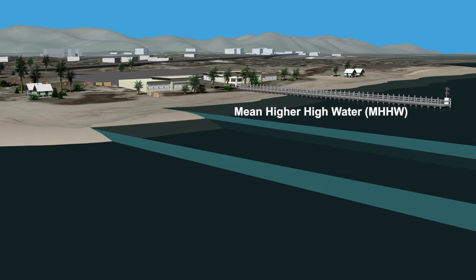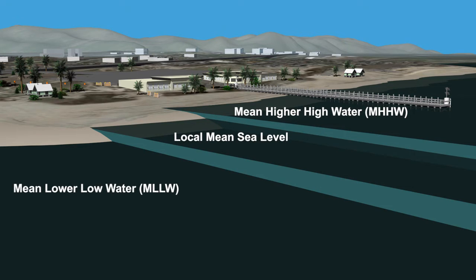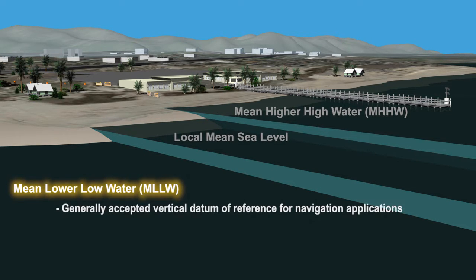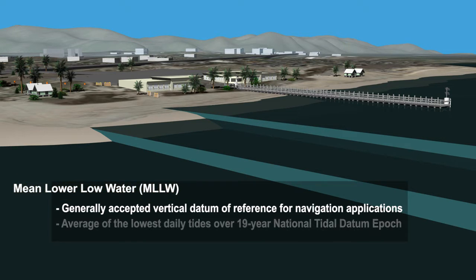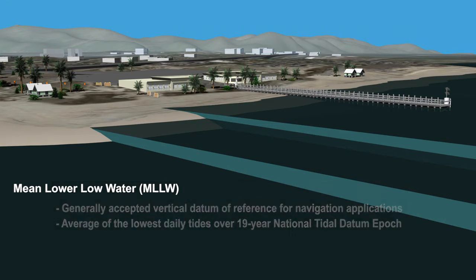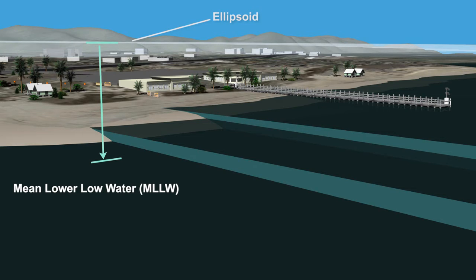Tidal datums are local reference planes defined from water level observations. For navigation applications, the generally accepted vertical datum of reference is Mean Lower Low Water — the average of the lowest daily tides over the 19-year period referred to as the National Tidal Datum Epoch. So, we need to transform our elevation information from an ellipsoid reference to Mean Lower Low Water to best support navigational needs.